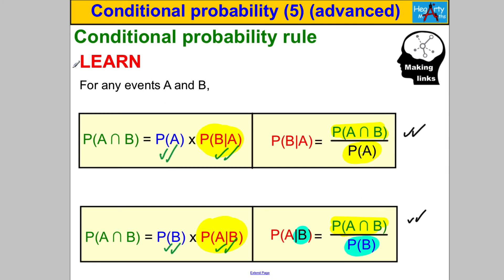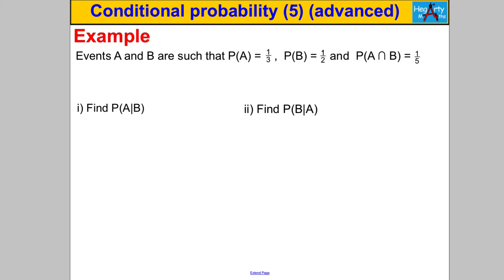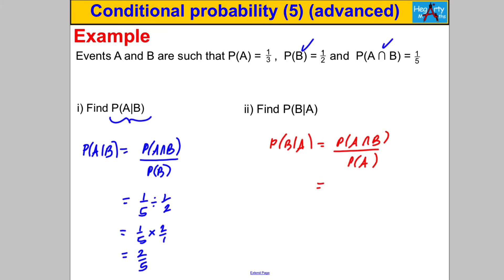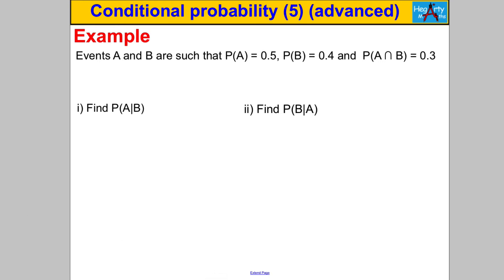Question 1: find P(A|B) and P(B|A). For P(A|B), the formula is P(A∩B) / P(B) = (1/5) ÷ (1/2) = (1/5) × 2 = 2/5. For P(B|A), the formula is P(A∩B) / P(A) = (1/5) ÷ (1/3) = (1/5) × 3 = 3/5.